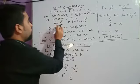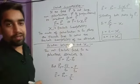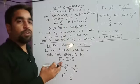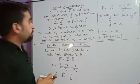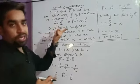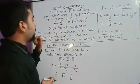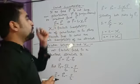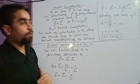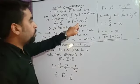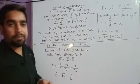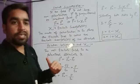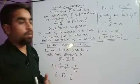Polarization is directly proportional to the electric field. In a dielectric material, more polarization means more applied electric field. The dipole moment increases as the electric field gets higher. So P is proportional to E, and when we remove the proportionality sign, two constants are introduced: epsilon naught and chi (χ), where epsilon naught is the permittivity of the medium.